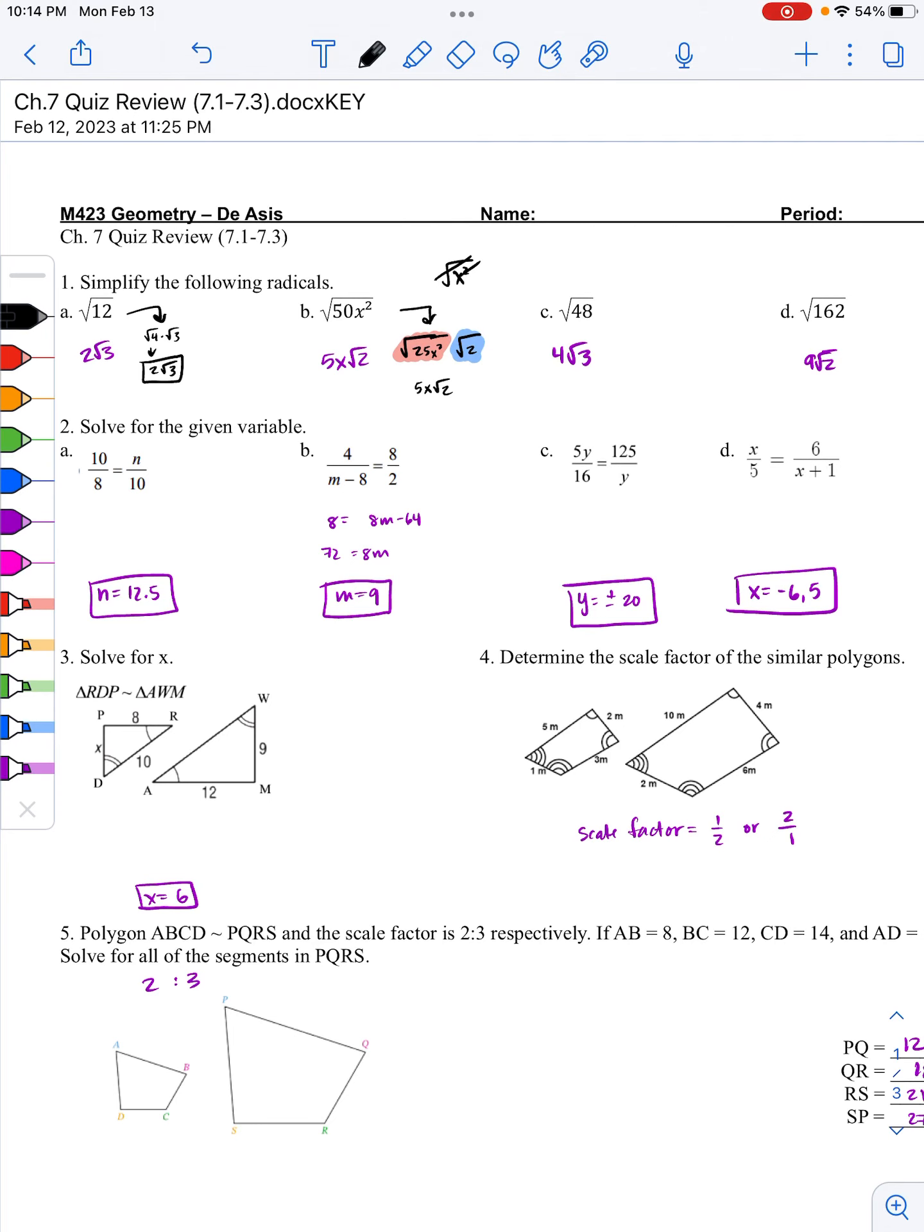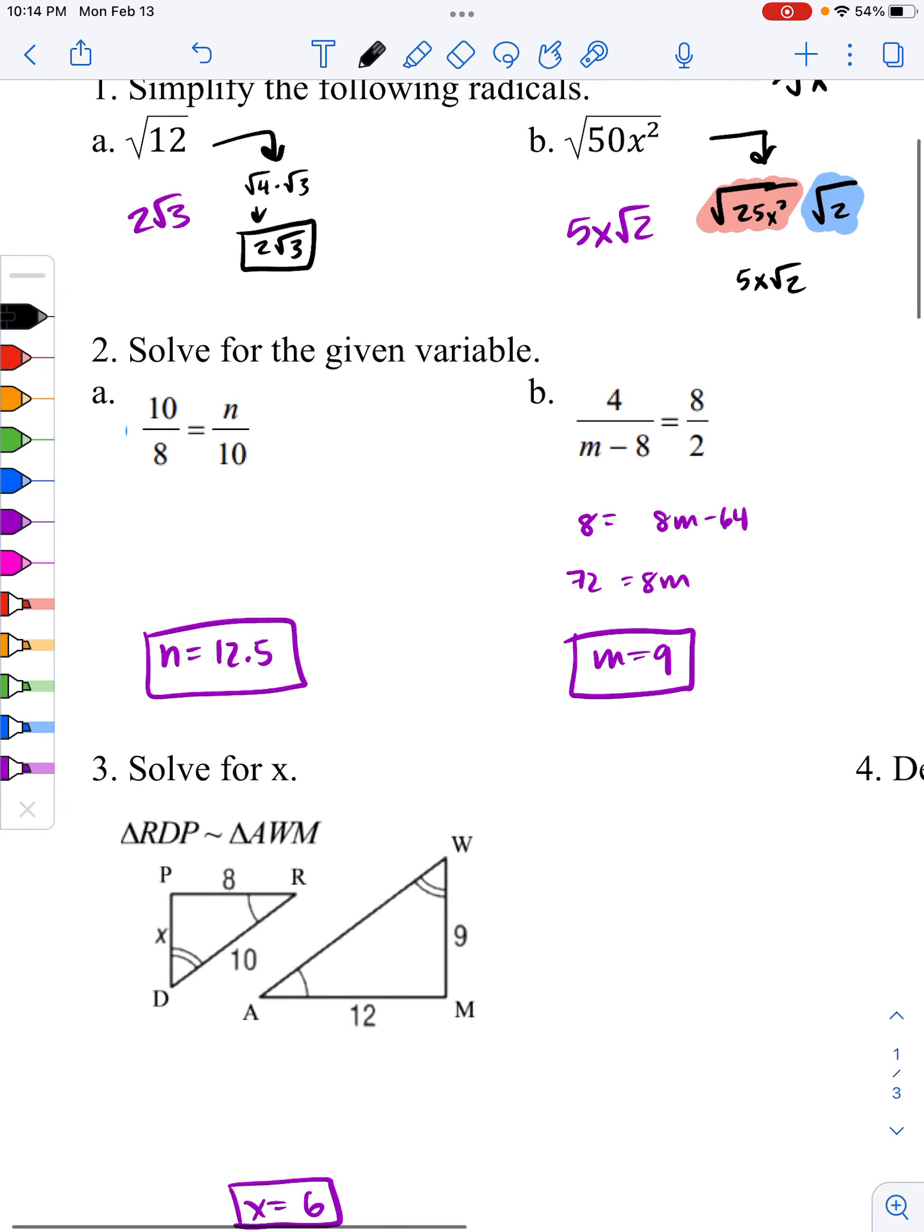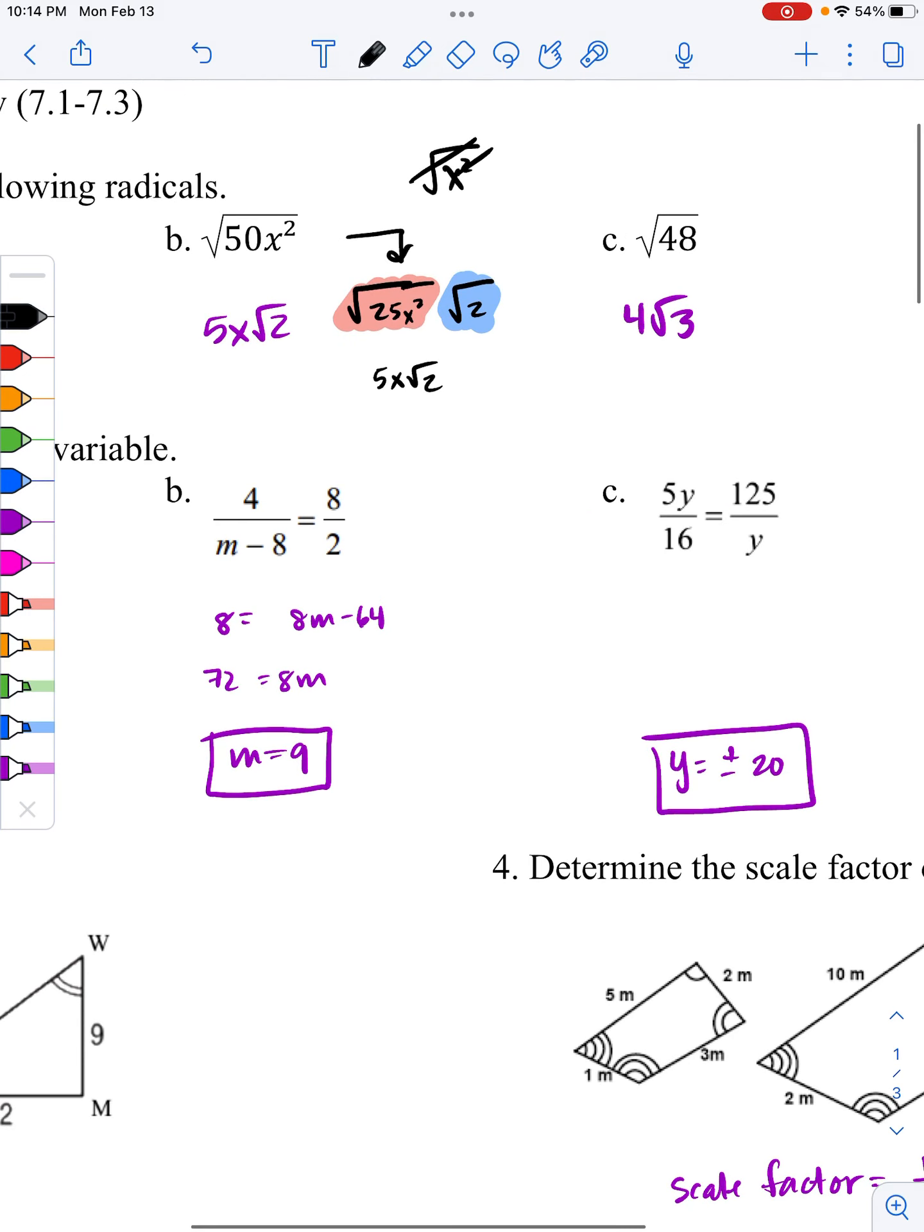I'm going to leave c and d so you can figure that out. Here, number two, specifically A, you should be able to do it on your own, but B in particular is a little bit strange because,